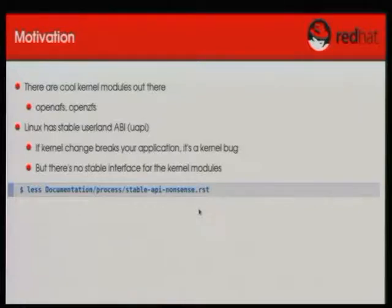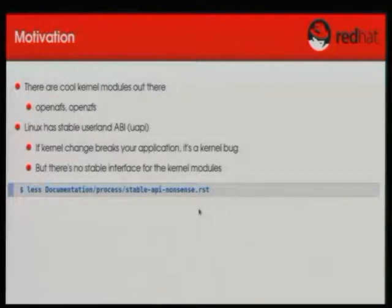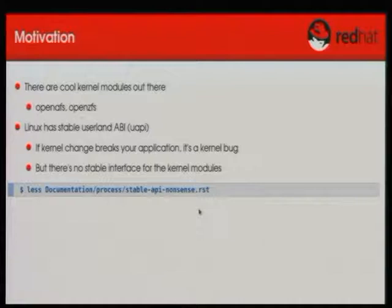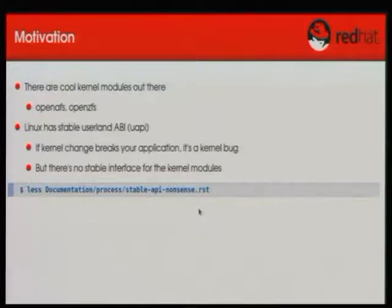Linux has a stable userland ABI. As Linus Torvalds says, any application which at any point in history has been working fine on some Linux kernel needs to work on any future Linux kernel. If a kernel update breaks your application, it's the kernel's fault. That's what we call the stable userland ABI — it covers all syscalls and structures passed between userland and the kernel, and also covers many file nodes like ProcFS. But there is no stable interface for kernel modules, and that is a very strong decision. It's very unlikely there will ever be a stable kernel interface for kernel modules. There's a write-up by Greg Kroah-Hartman as part of the Linux sources explaining why this decision was made and how you can deal with it.